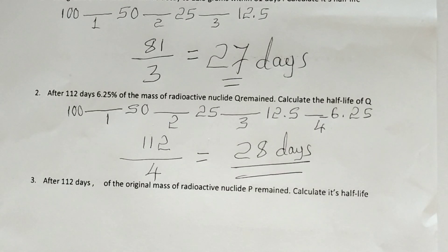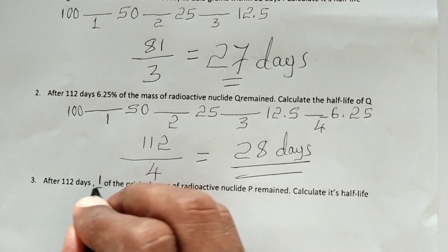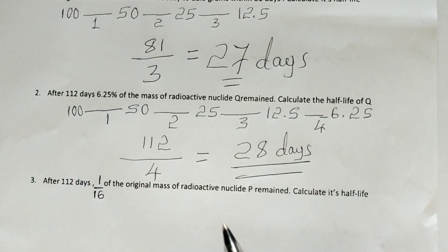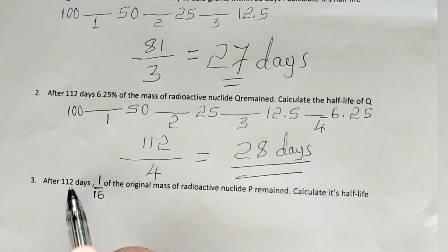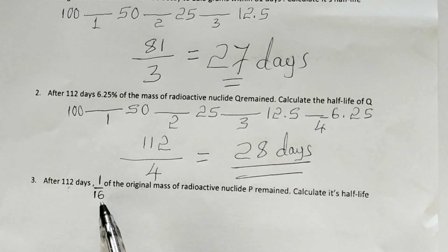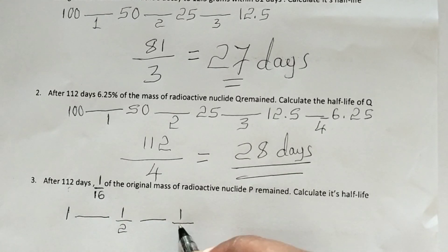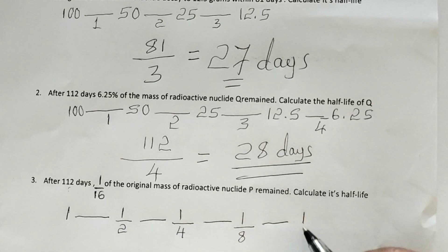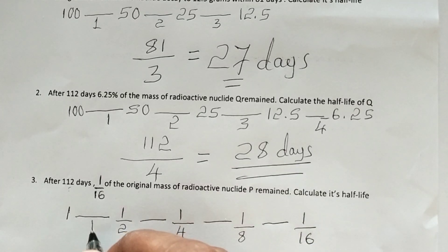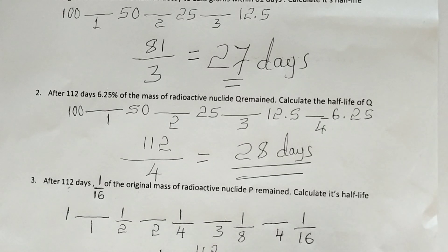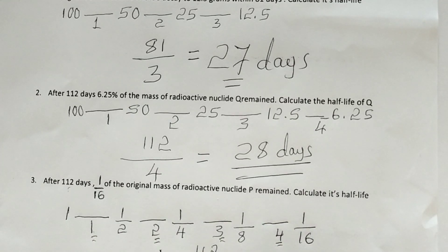Question 3: After 112 days, 1/16 of the original mass of radioactive nuclide P remains. Calculate its half-life. Total time taken is 112 days; the remaining amount is 1/16. The original was 16/16 = 1. Half of 1 is 1/2; half of 1/2 is 1/4; half of 1/4 is 1/8; half of 1/8 is 1/16 — giving 4 periods. Half-life equals 112 days divided by 4, which equals 28 days.